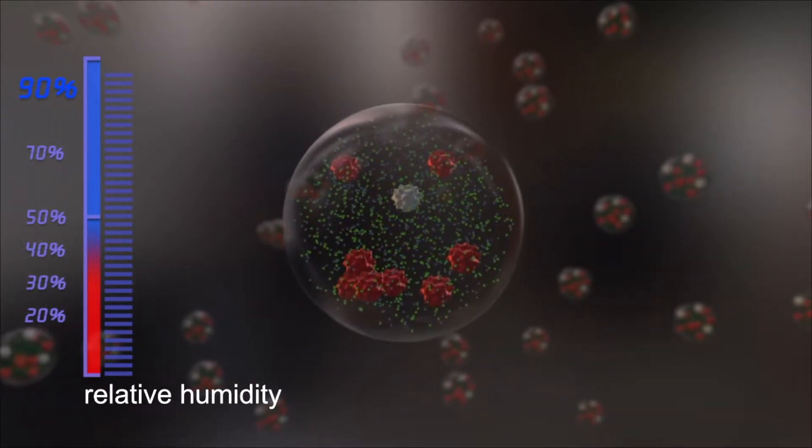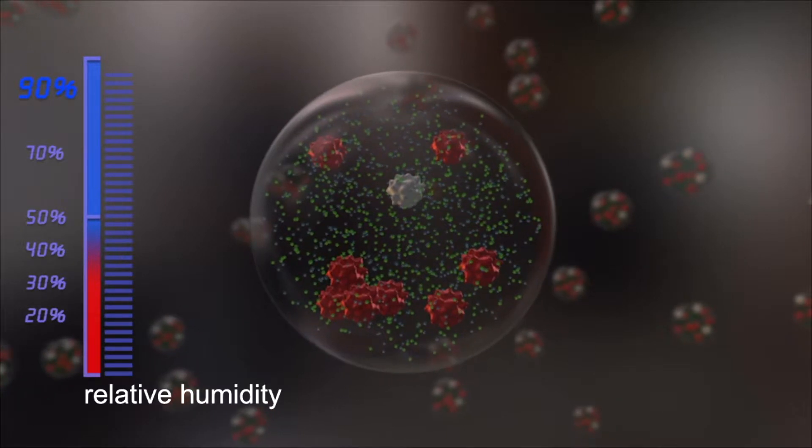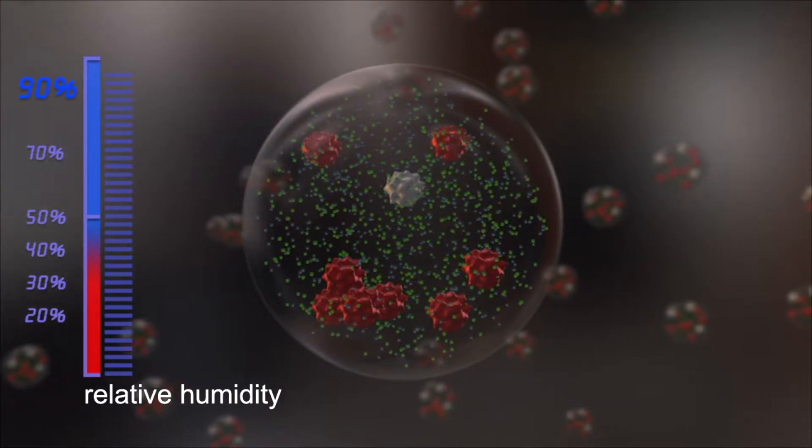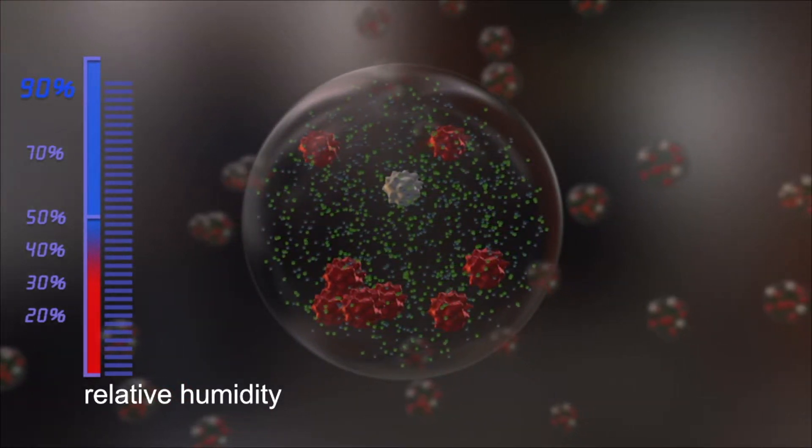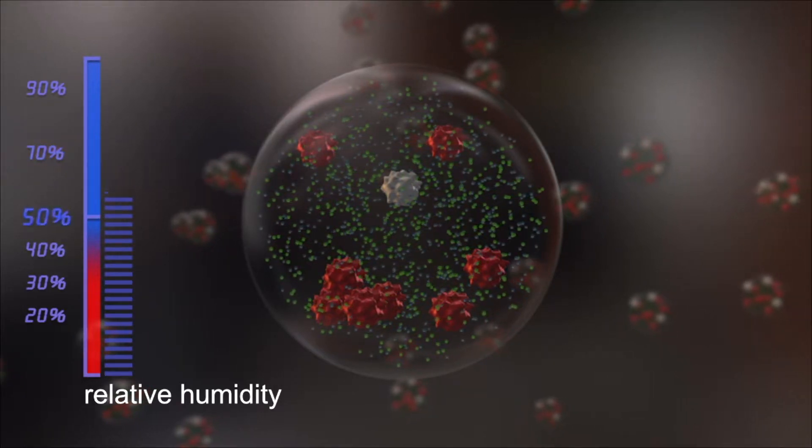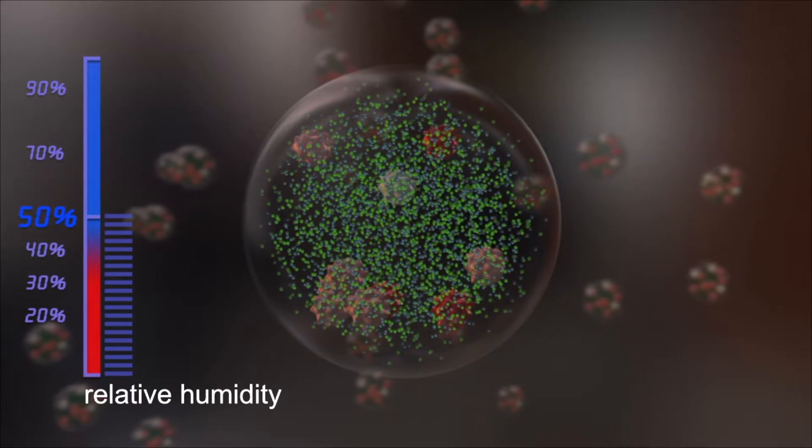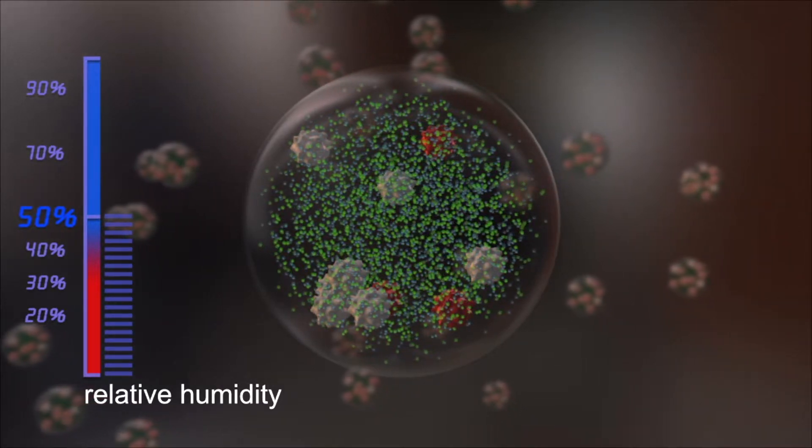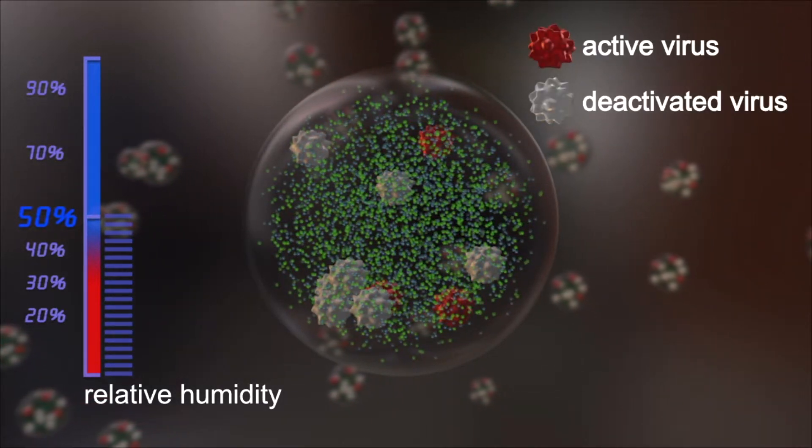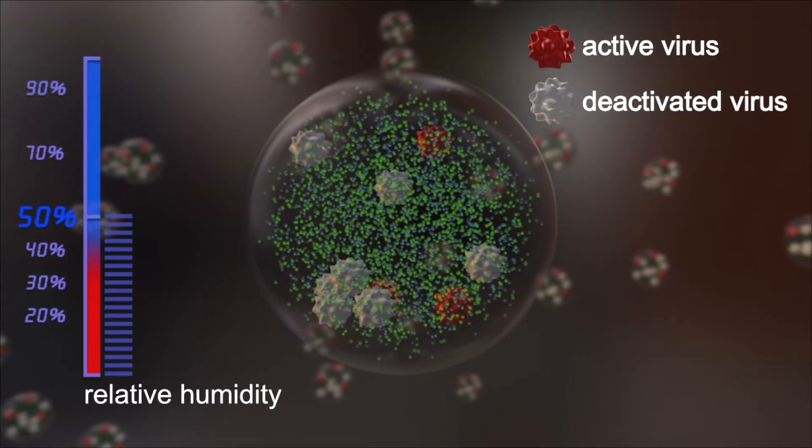If the relative air humidity in the office is within the optimum range for human well-being, namely 40 to 60%, the salt concentration rises to a level where most of the viruses cannot survive and become deactivated. The risk of infection within this optimum range for relative humidity is minimal.